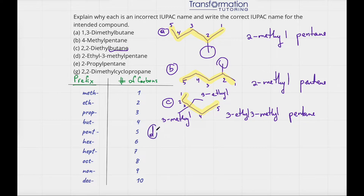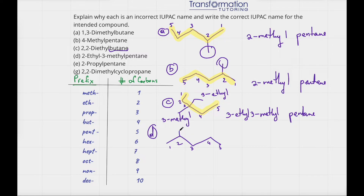Let's do D: 2-ethyl-3-methylpentane. We start by drawing pentane: 1, 2, 3, 4, 5 — a 5-carbon molecule. On the second carbon I have an ethyl group, which is 2 carbons coming off. On the third carbon I have a methyl group. Now I'll erase my numbers and find the longest parent chain. This used to be my parent chain but actually this chain is longer — that's why this name is wrong.